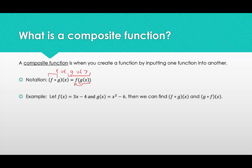Let's look at an example. We're going to let f(x) = 3x - 4 and g(x) = x² - 6. We can find two different composite functions. Keep in mind that composite functions are not commutative, meaning f of g of x is not the same as g of f of x — not always, though sometimes it is.